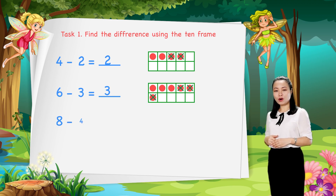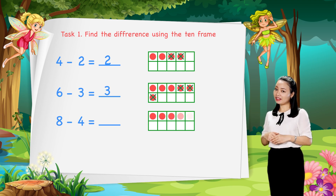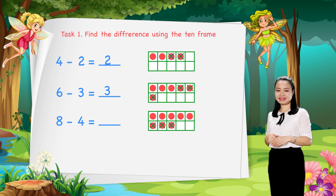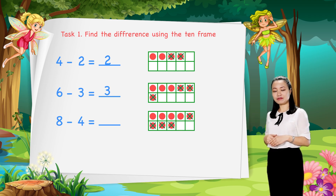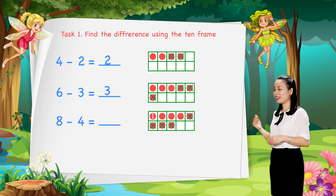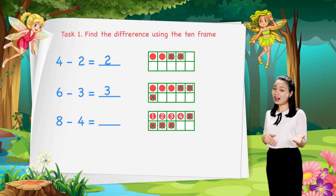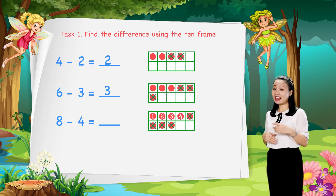Next, find 8 minus 4. We draw 8 dots in the 10 frame. Then, cross out 4 dots. Then, count the number of dots left to find the difference. Let's count: 1, 2, 3, 4. So, 4 dots left. Therefore, 8 minus 4 equals 4.